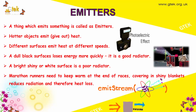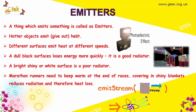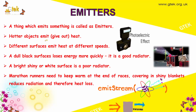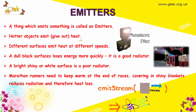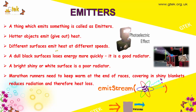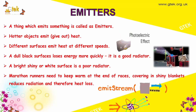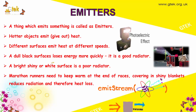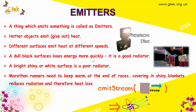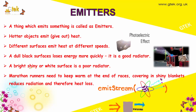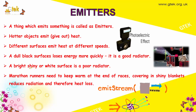Now let's talk about emitters. A thing which emits something is called an emitter. Hotter objects emit — that is, they give out heat. Different surfaces emit heat at different speeds. A dull black surface loses energy more quickly because it is considered to be a good radiator, whereas a bright shiny or white surface is considered to be a poor radiator.